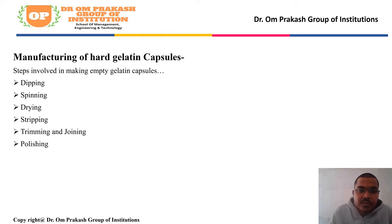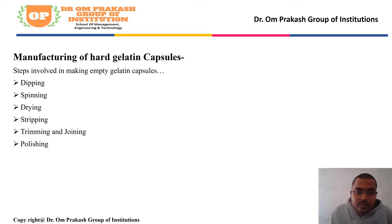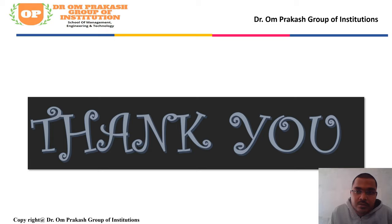Manufacturing of hard gelatin capsules involves the following steps: first dipping, second spinning, third drying, fourth stripping, fifth trimming, and finally joining and polishing. Thank you.